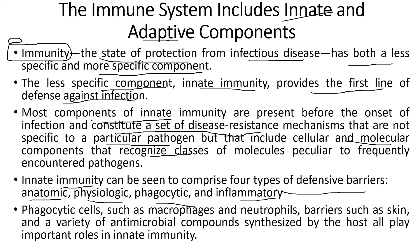Phagocytic cells — which most of you may already know — are mainly macrophages and neutrophils, as you can see on screen. Phagocytic cells, majorly macrophages and neutrophils, along with barriers such as skin and a variety of antimicrobial compounds synthesized by the host, all play important roles in innate immunity.